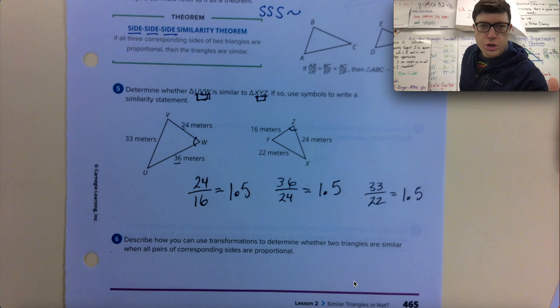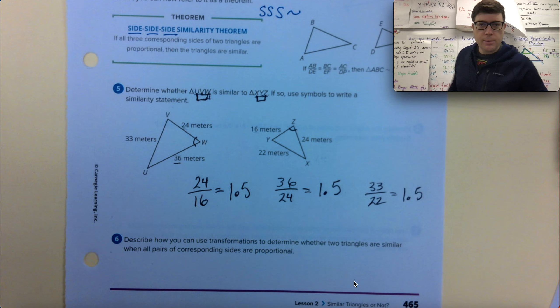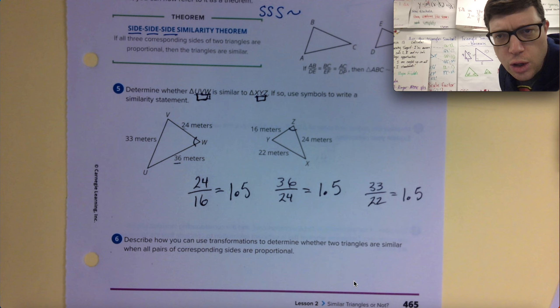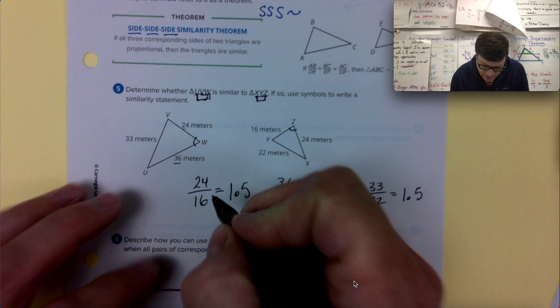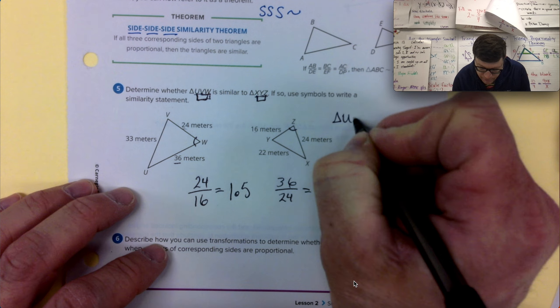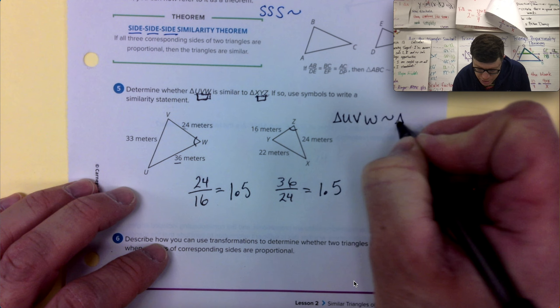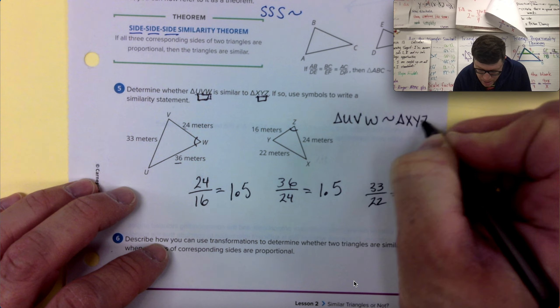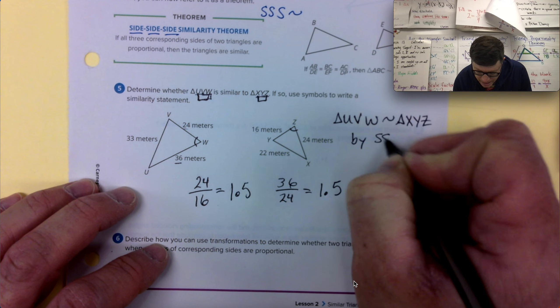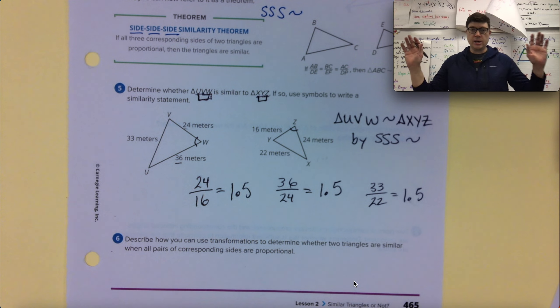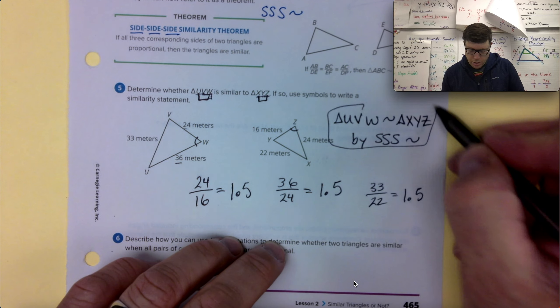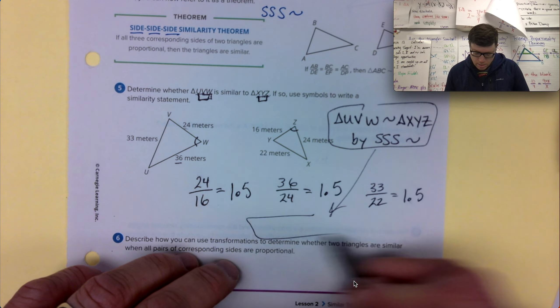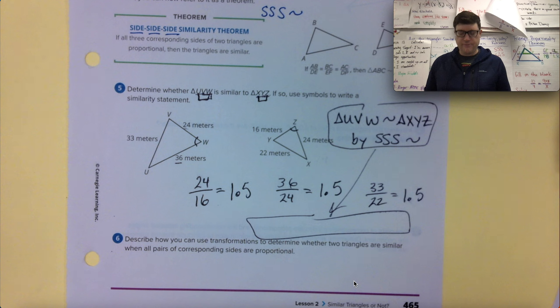Determine whether triangle UVW is similar to triangle XYZ. And if so, use symbols to write a similarity statement. So they are similar. And the way to write them is triangle UVW is similar to triangle XYZ by side, side, side similarity. Done. I guess technically this should go after all of the math that justifies it.